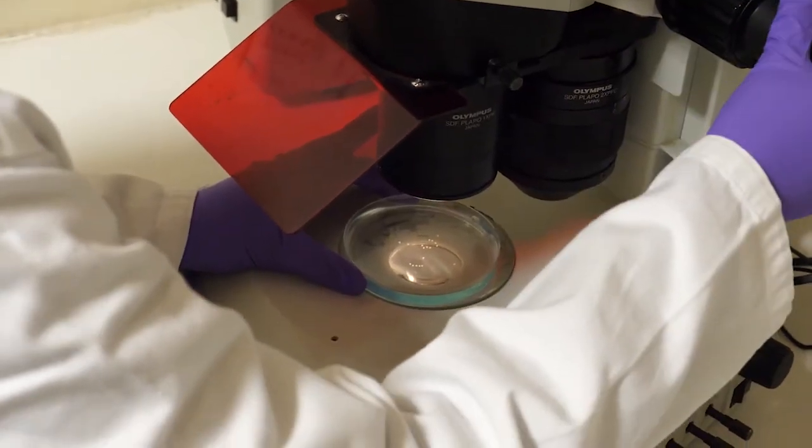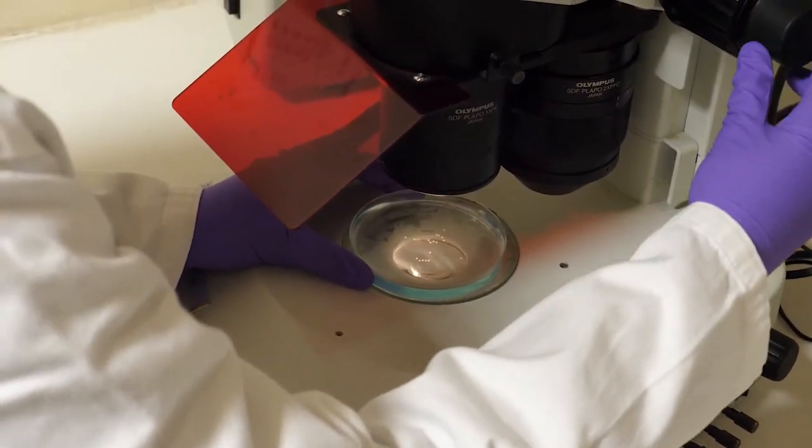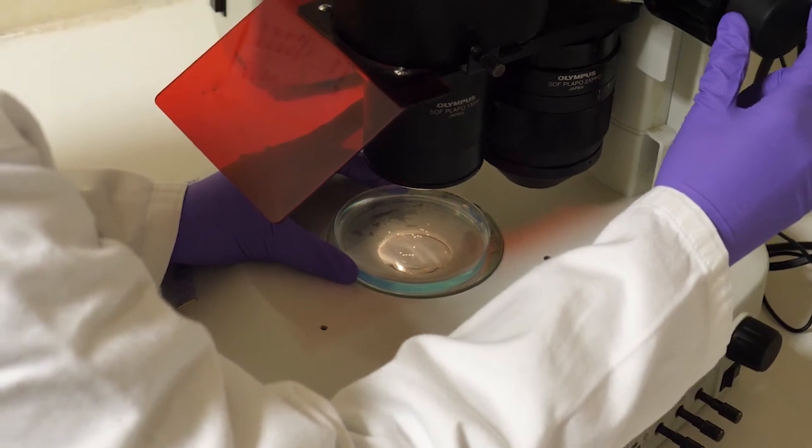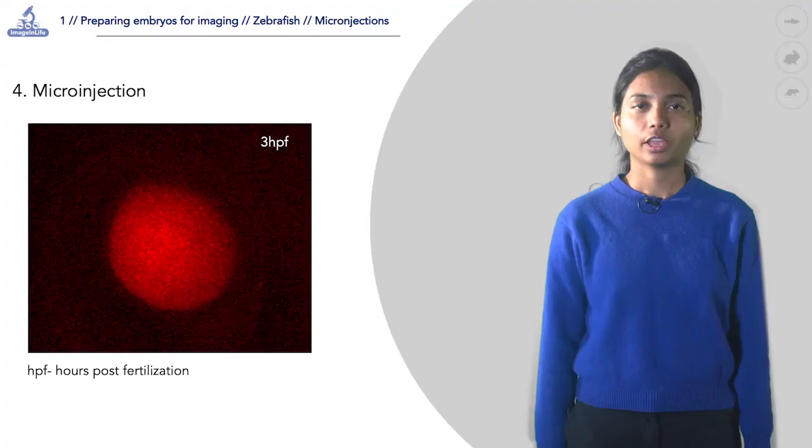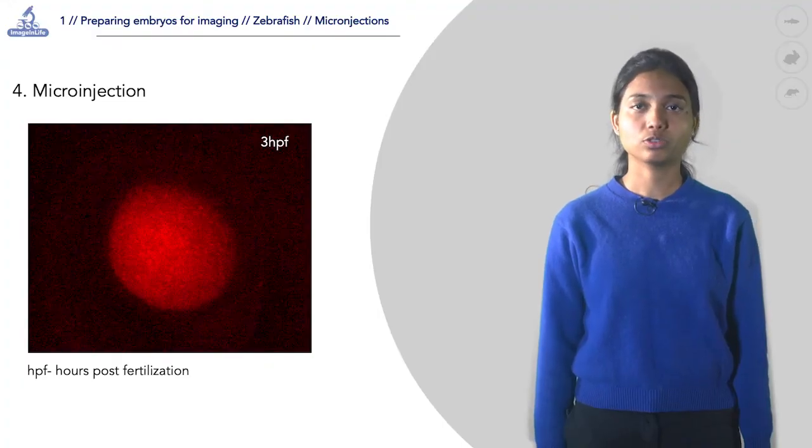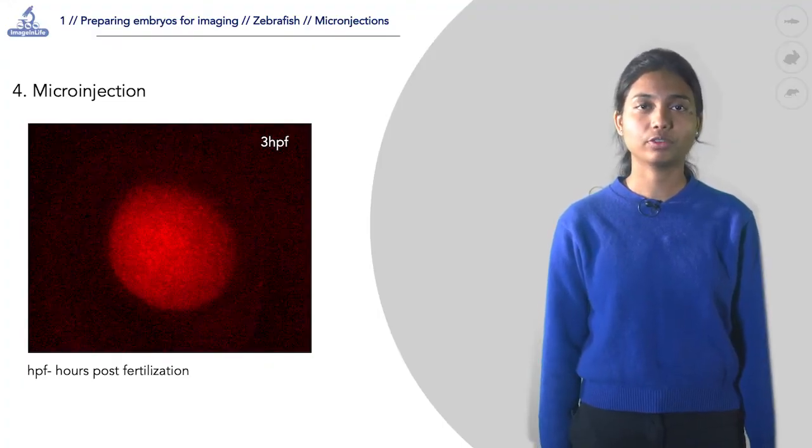At three hours post-fertilization stage, embryos are screened for mCherry expression using a fluorescent stereo microscope through an RFP filter. Embryos exhibiting strong and homogeneous staining are selected for live imaging experiments.